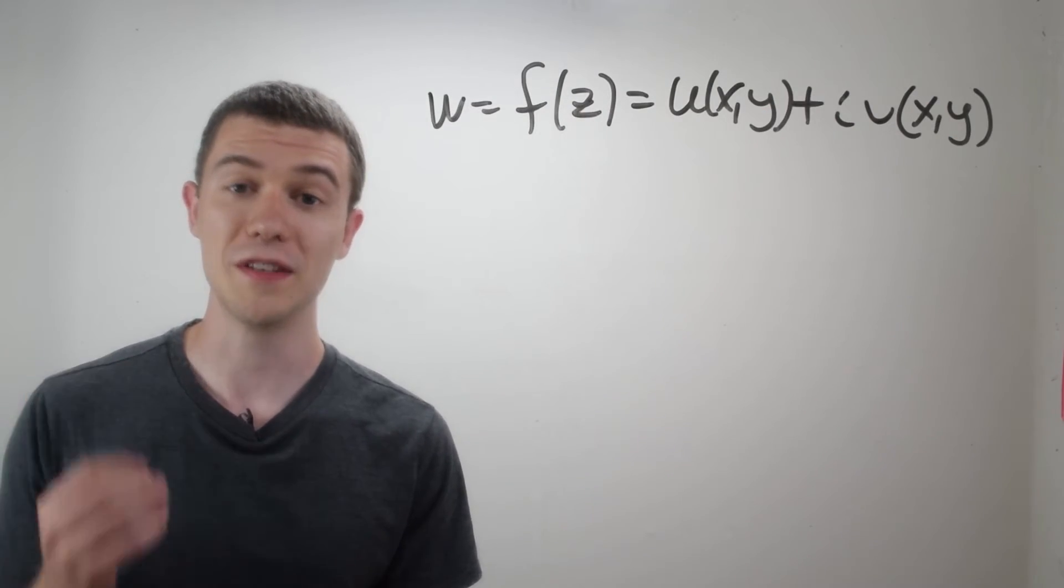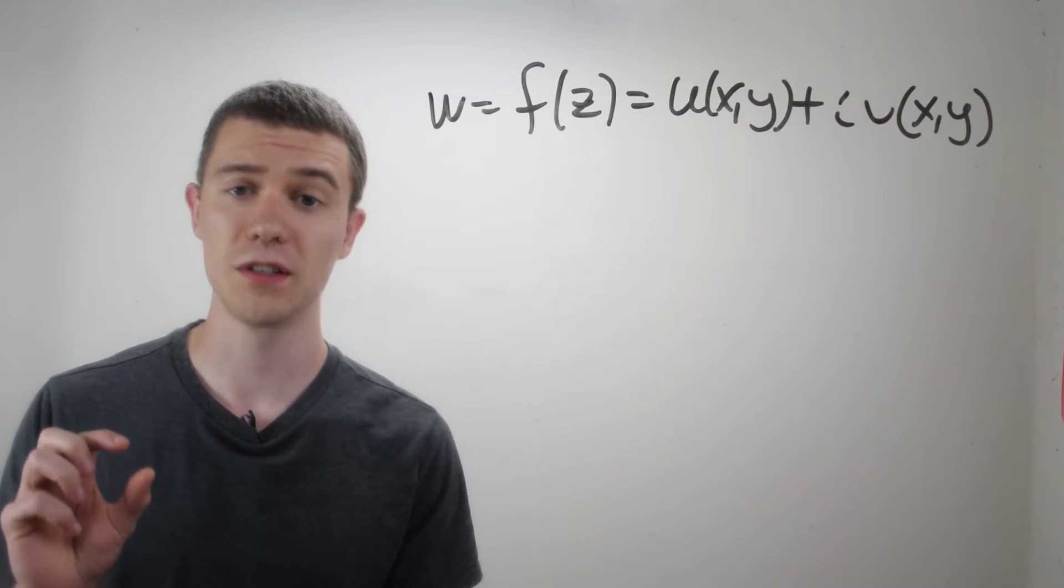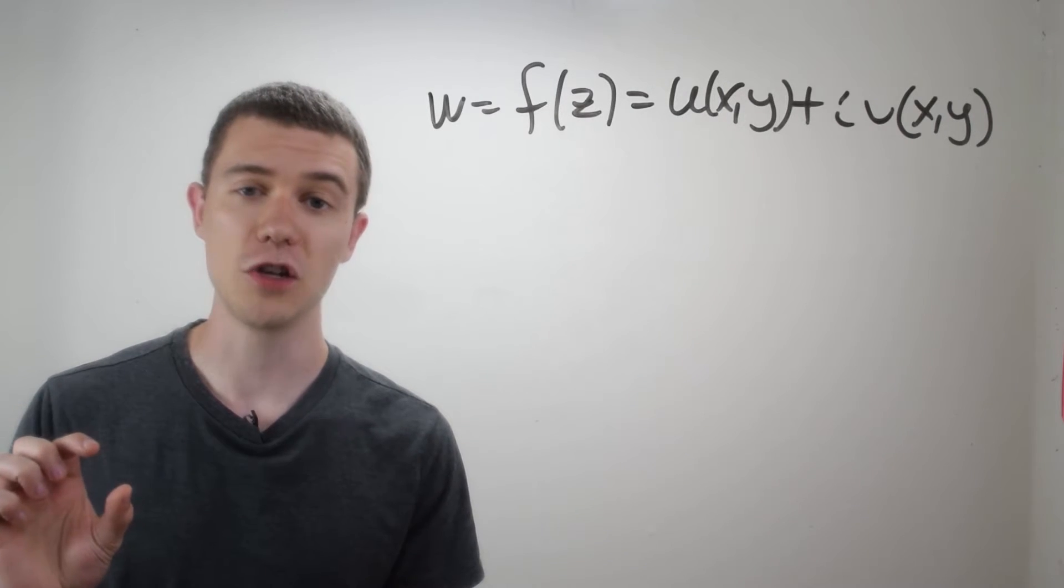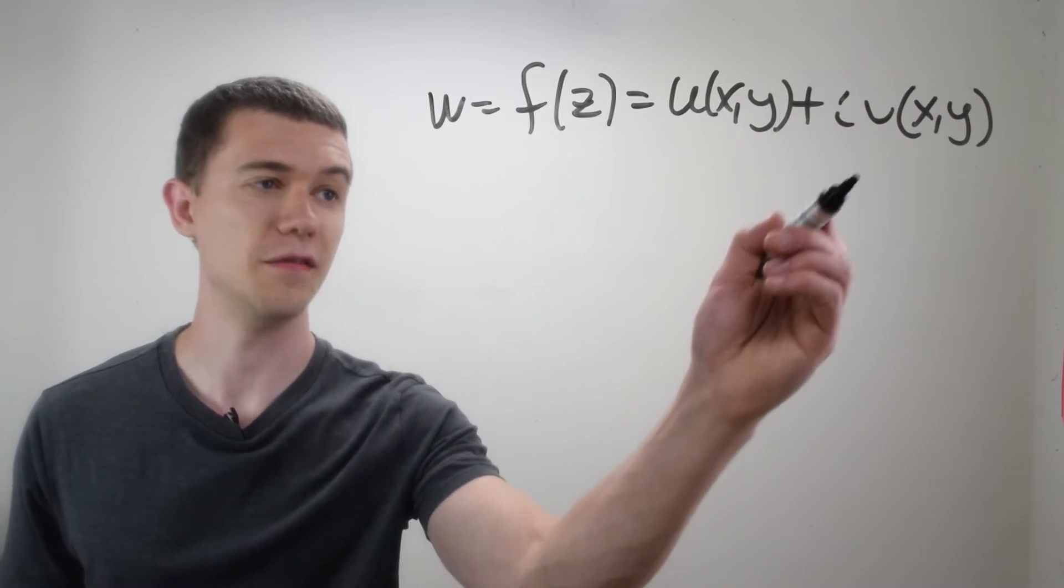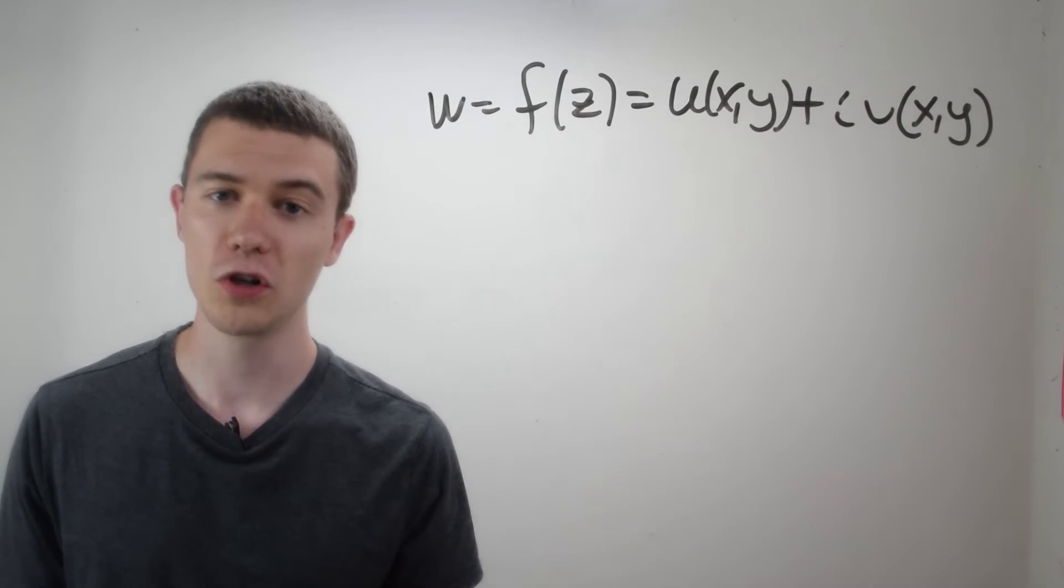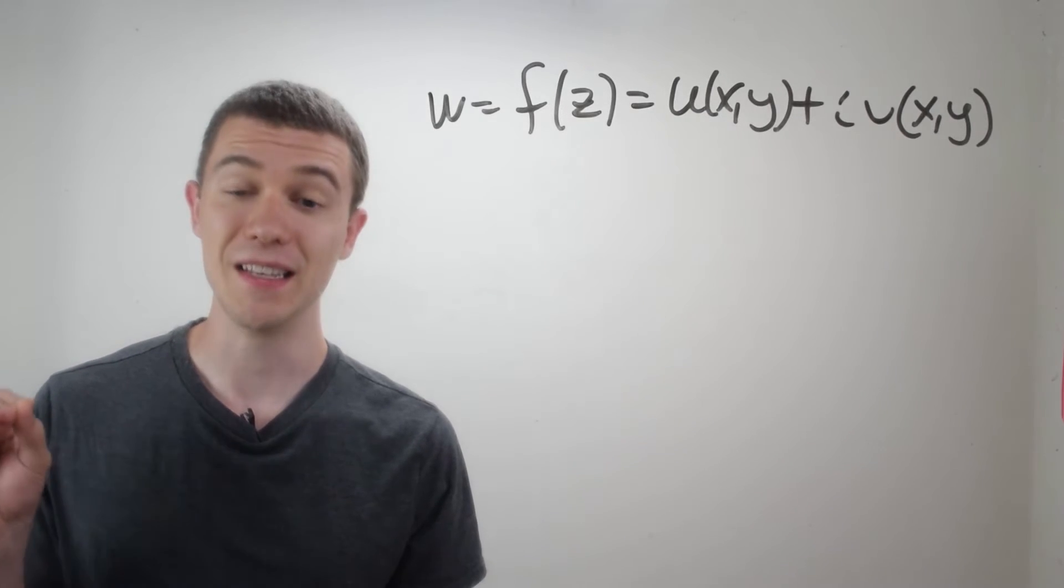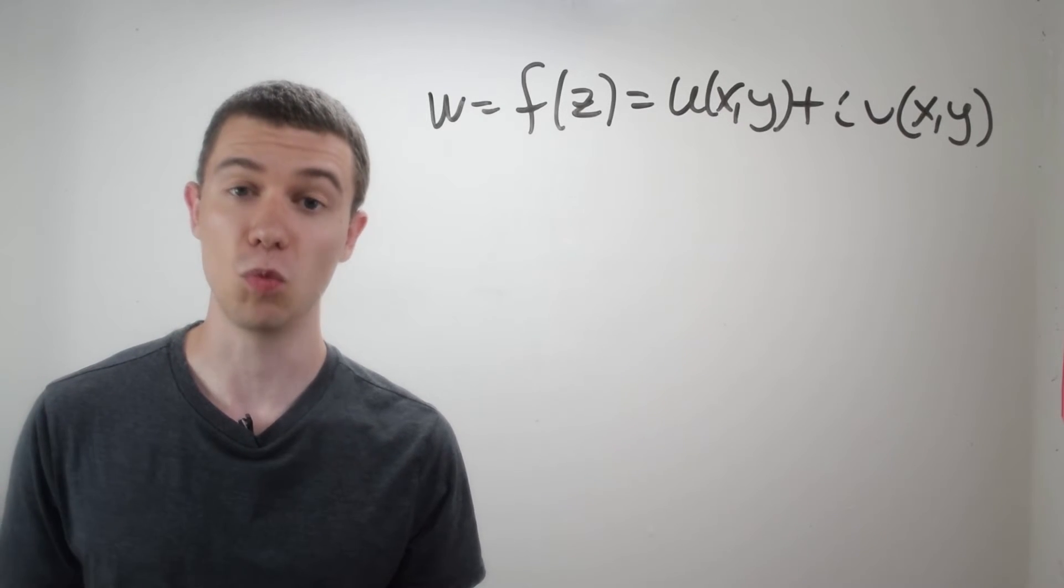Another way that's common to represent complex functions is in terms of their real and their imaginary parts. And we usually call the real part u and the imaginary part v. So you'll notice that the v has an i next to it. U and v are both functions of real variables x and y. So remember, z is equal to x plus yi. And we can write any complex function in this form.